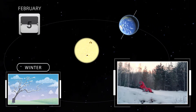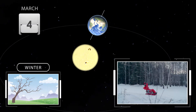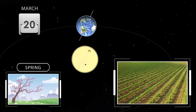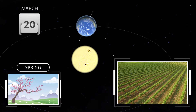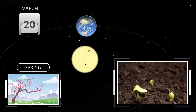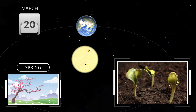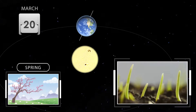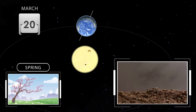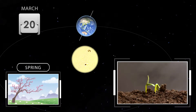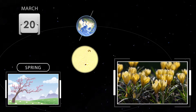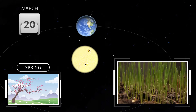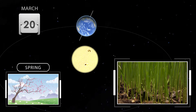As the Earth makes its way around the sun, the axis tilt is always the same. On March 20th or so, we have the spring equinox in the northern hemisphere. During the equinox, neither the northern nor the southern hemispheres are tilted away from the sun. Almost everyone on the Earth has the same day length — about 12 hours of day and 12 hours of night.